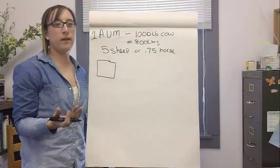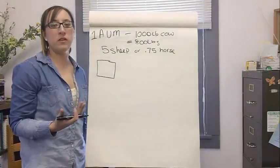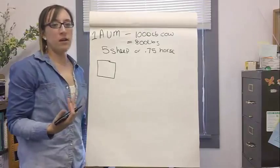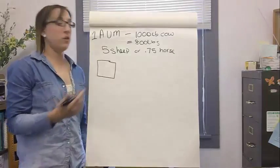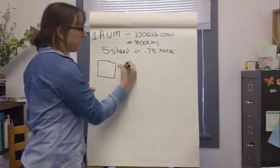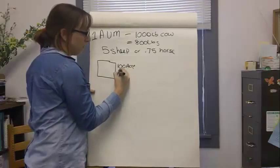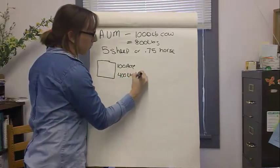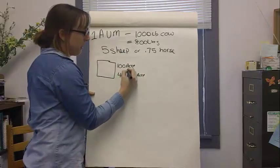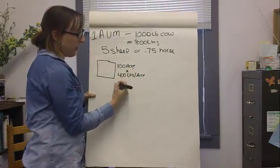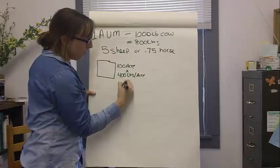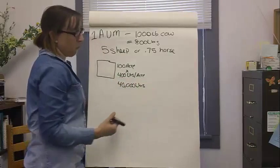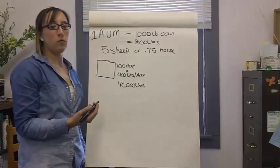Let's run through an example of how to use these numbers to calculate our stocking rate. We'll start with forage supply. In our example ranch, we have a 100-acre pasture that produces 400 pounds per acre. When we take 100 acres times 400 pounds per acre, we get 40,000 pounds of forage. This is our total forage production.